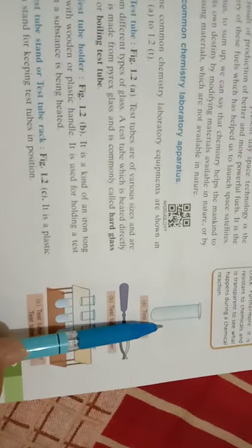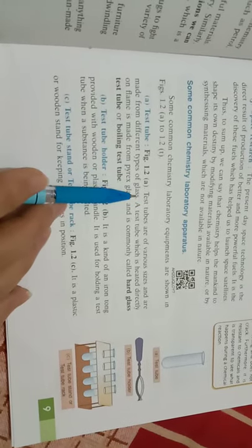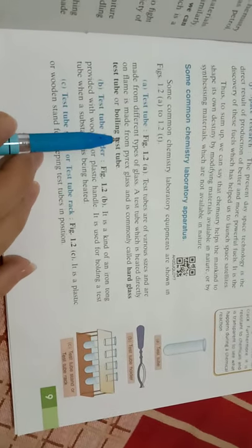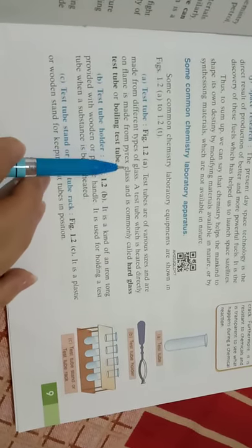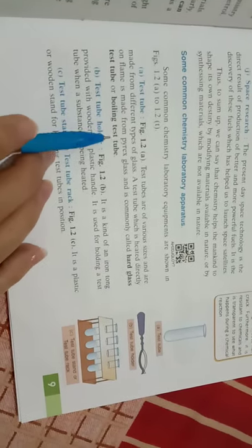We are going to discuss some common chemistry laboratory apparatus. I already showed you in the class the test tube. We already discussed that test tubes are made from different types of glass. A test tube which is heated directly on the flame is made from pyrex glass. There are commonly hard glass test tubes and boiling test tubes.